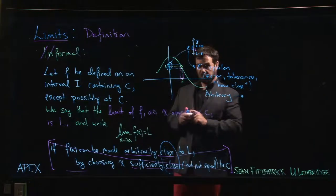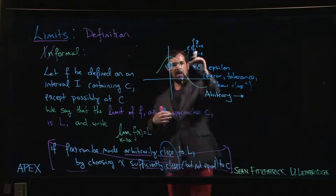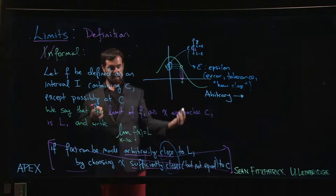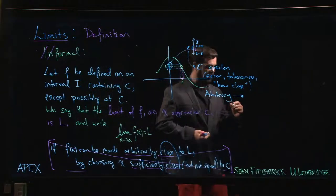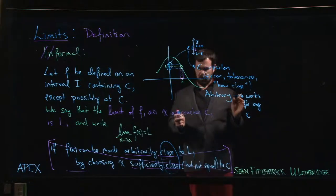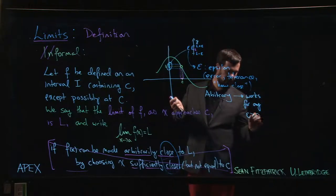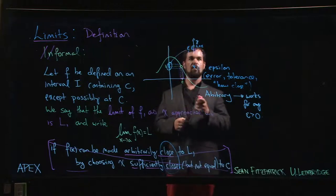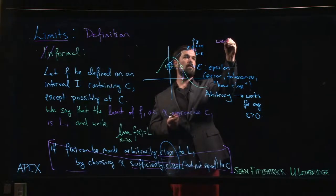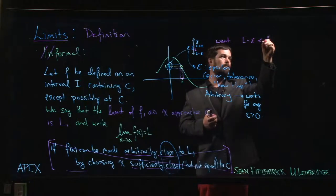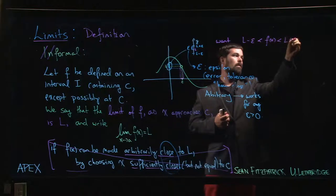We're playing a game where I want to get f(x) in this range, and you get to tell me how close — you get to decide. The 'arbitrary' part means no matter how close you tell me to make it, I can pull it off. So this must work for any epsilon you choose. Since epsilon represents a distance, it had better be positive — so epsilon should be greater than zero.